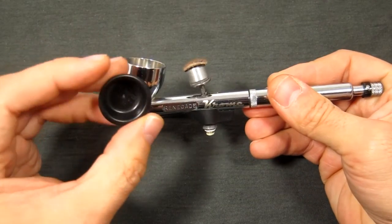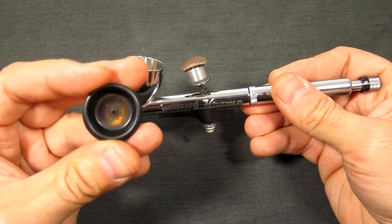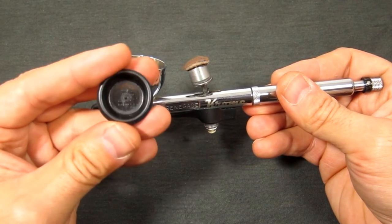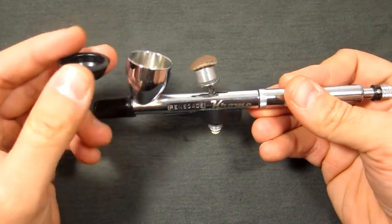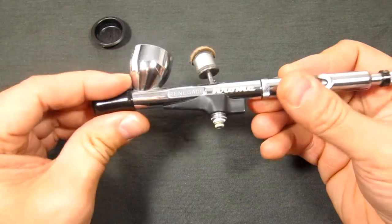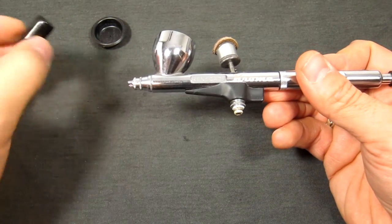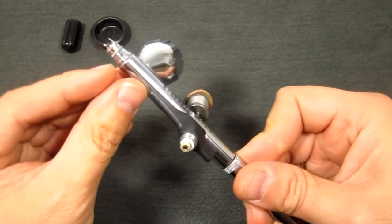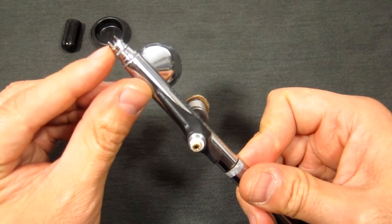So we're going to take off the paint cup cap—this helps prevent the paint drying out too quickly and also prevent splashes from getting on your work—and then we've got this protective cap which protects the nozzle prongs and the needle tip.